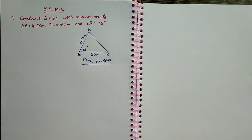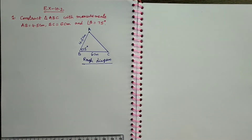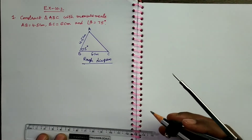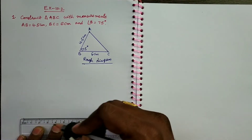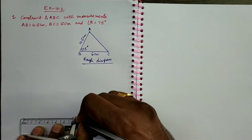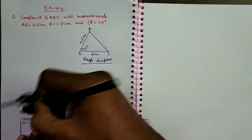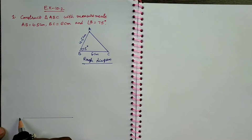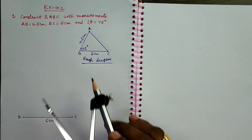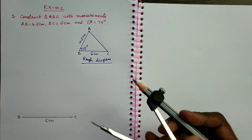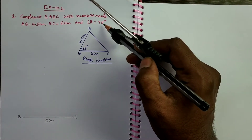Now let us go to the original construction diagram. Take 6 cm as the base, that is BC. Keep one point at 0 on the scale and take the other point at 6 cm. So this is BC = 6 cm.